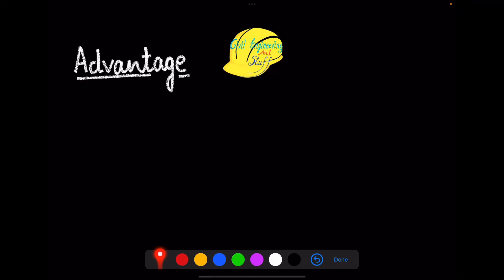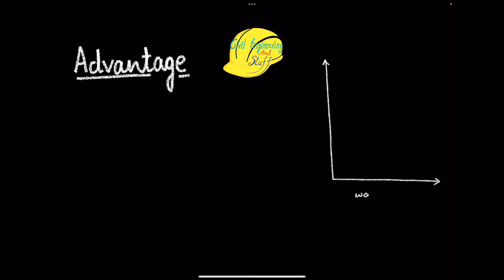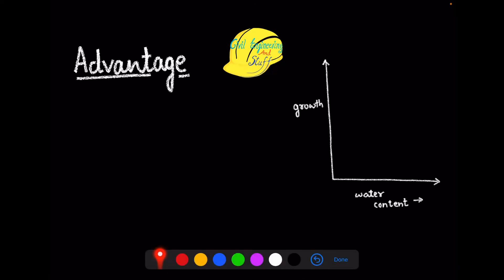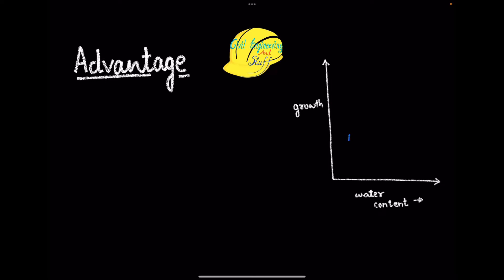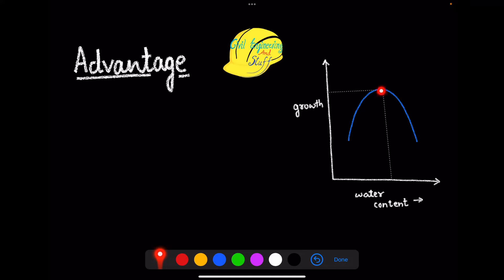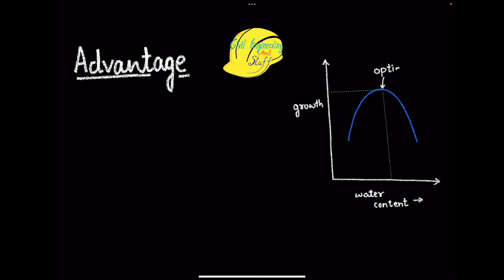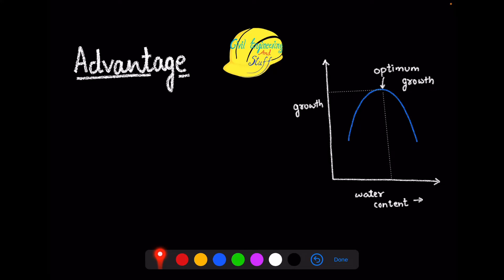Why do we need to apply water artificially? This can be explained through a simple graph drawn between the water content and the growth of a respective crop. There will be an optimum quantity of water where the maximum growth takes place. What we want is that our crop or plant receives this optimum quantity of water so that it leads to its maximum capacity.